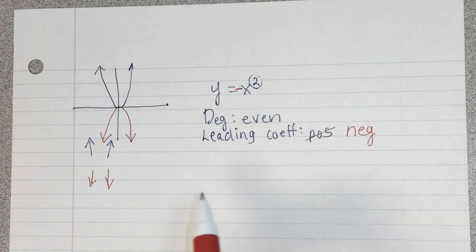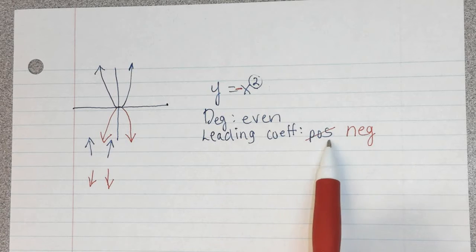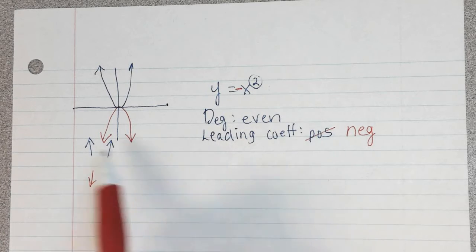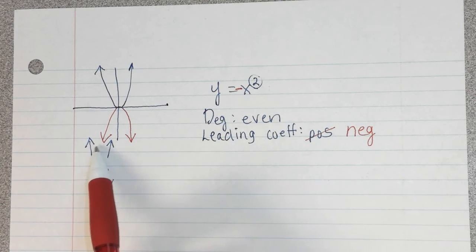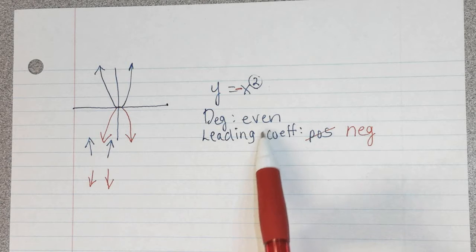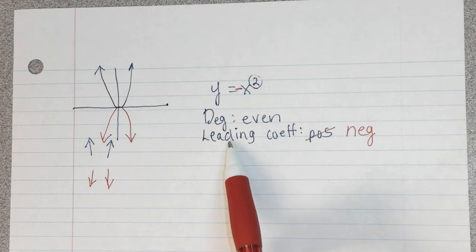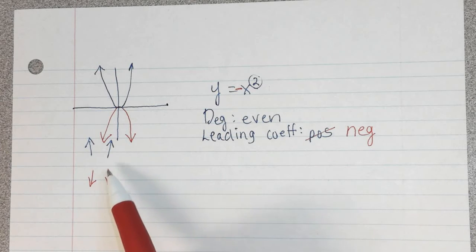So what generalization we can make is any time we have an even function, when it's positive, it's always going to go like this, it goes in the same direction and it goes up. When we have that even degree and the leading coefficient is negative, it still does the same thing at the end but it goes down in both directions.